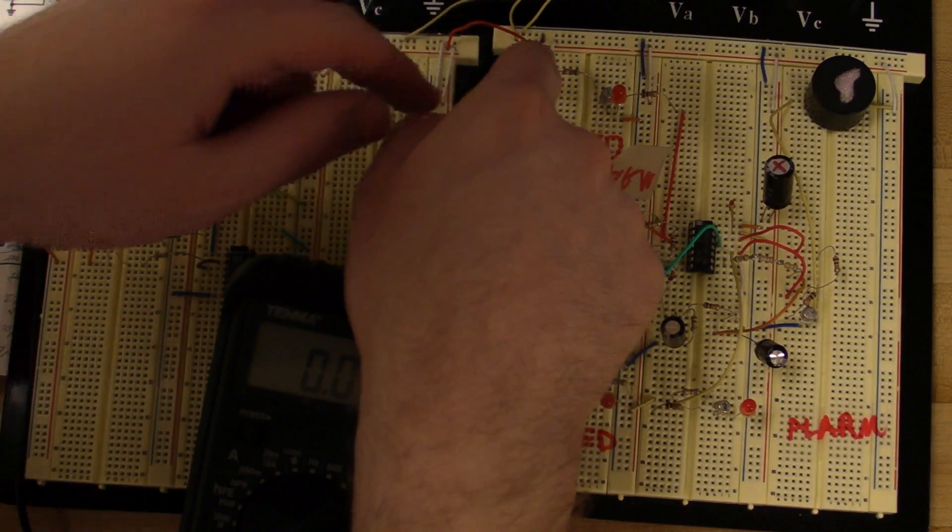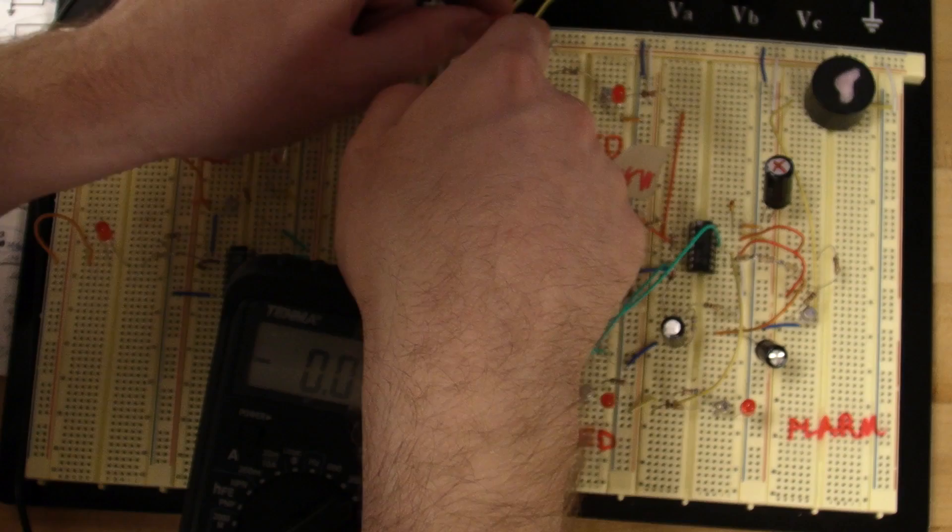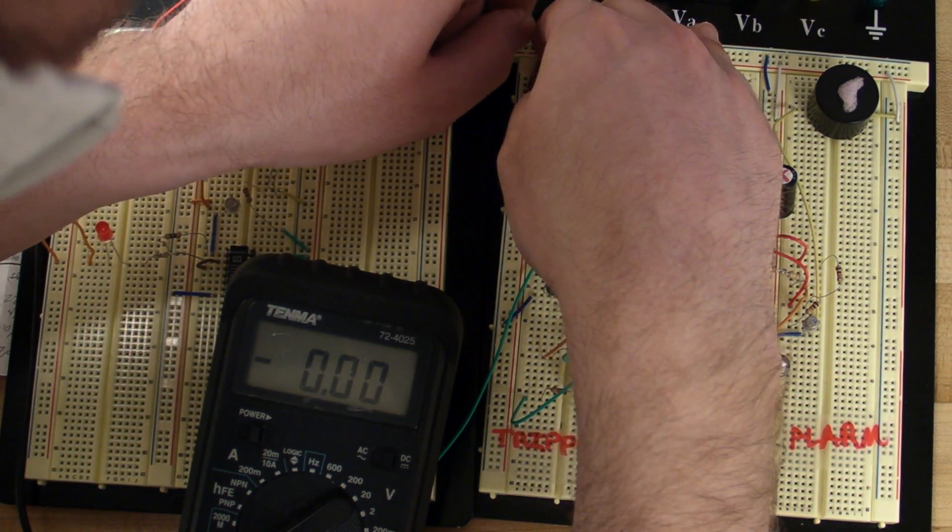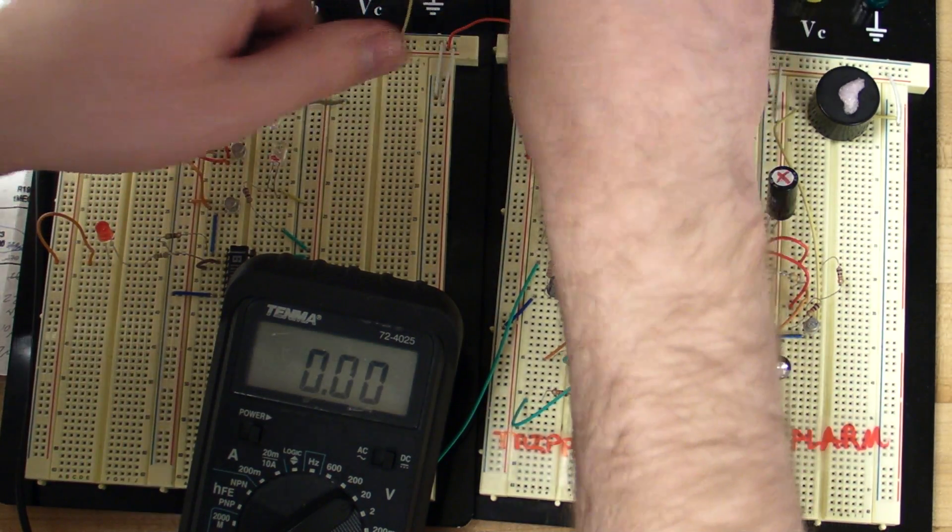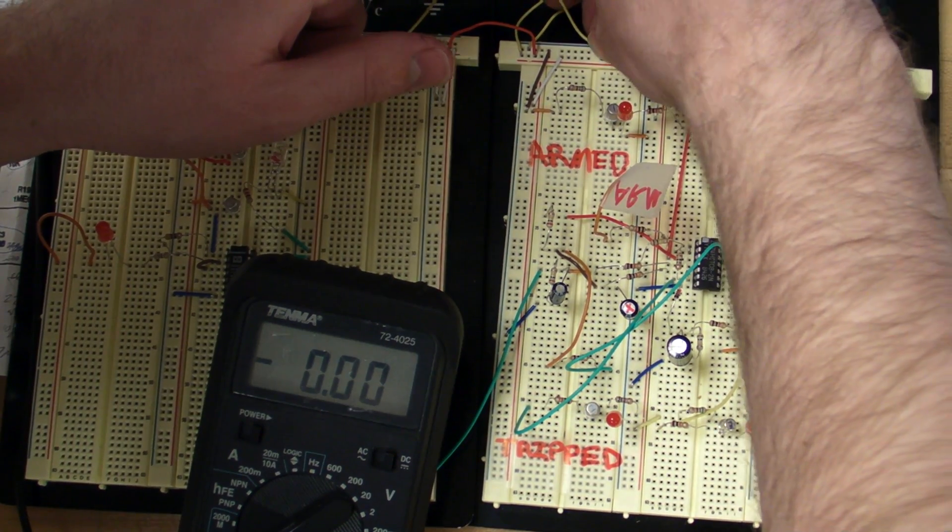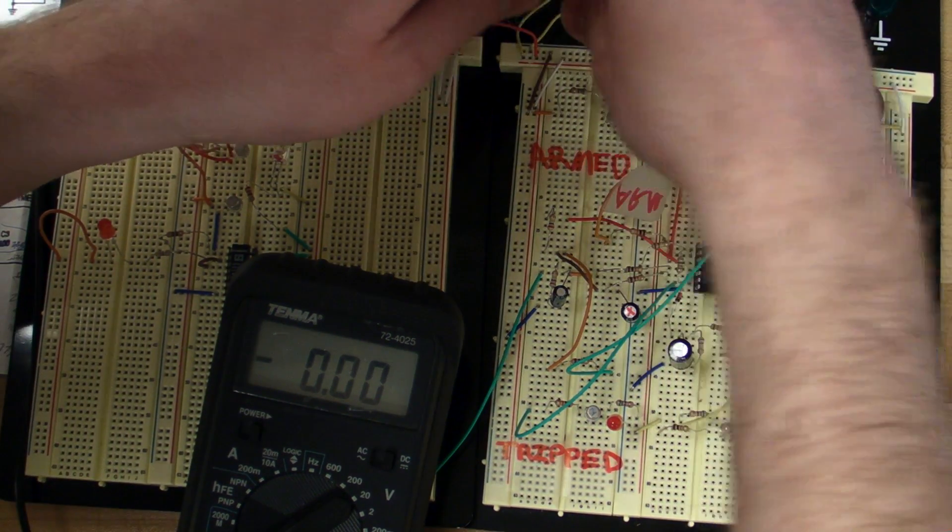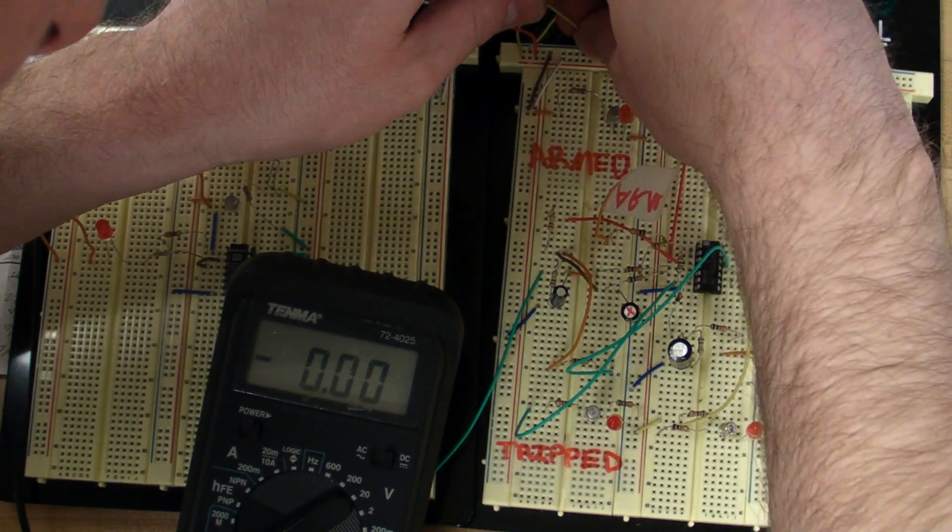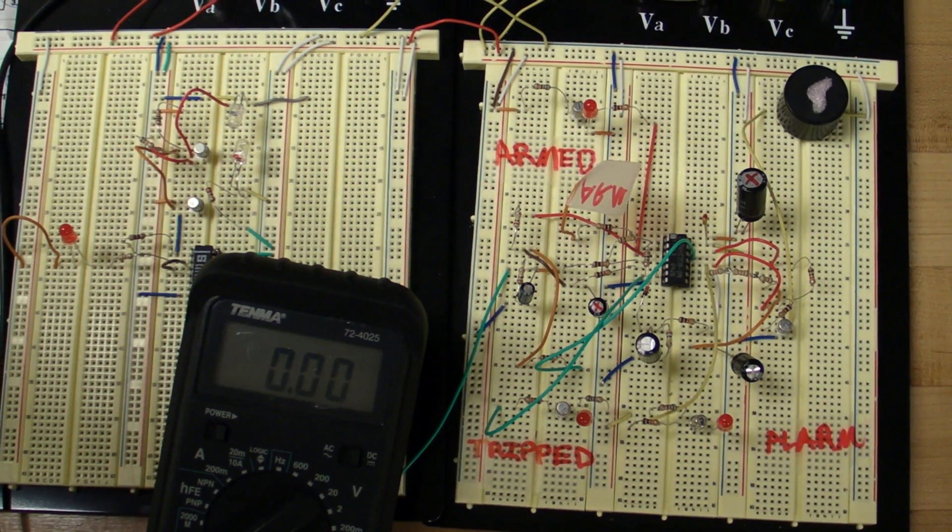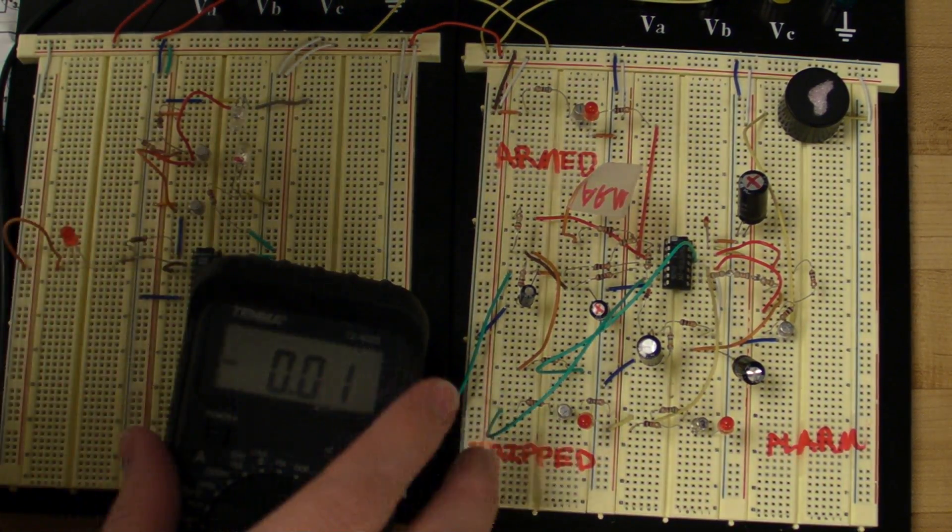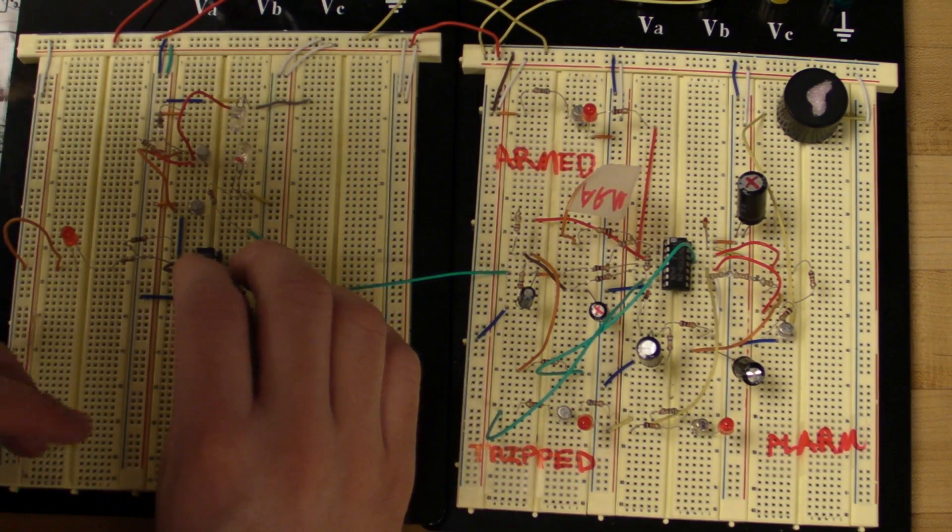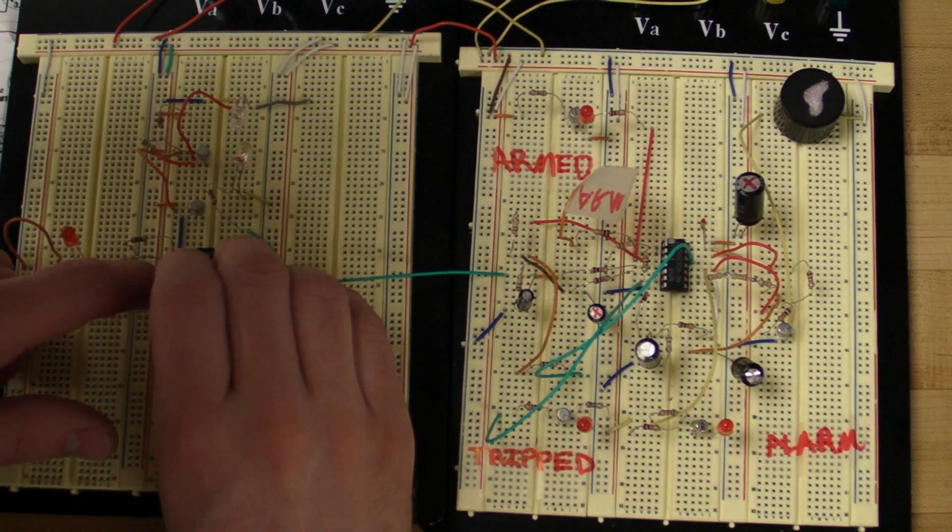So let me just set this up right now, turn off our output. Connect our positive voltages. Connect our negative, our grounds, our negative voltages. And connect our trip over to our high pin. Which in this case is pin 4.